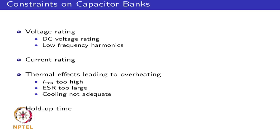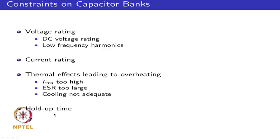The DC voltage rating was considered, and we have to consider the effect of low-frequency harmonics on the voltage rating. In the last class we took a close look at the current rating and saw that it has thermal implications, implications on power loss and cooling, and the temperature of the capacitor core, which has reliability implications. There are other factors such as hold-up time of the capacitor, which can be important in DG applications. From the reliability perspective we looked at a simplified bathtub curve model for the capacitor component, and came up with an estimate for end of life.